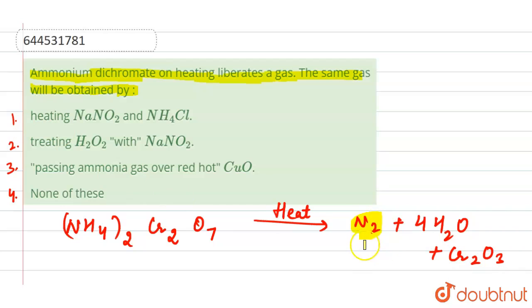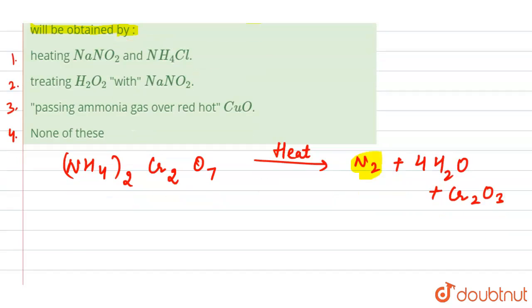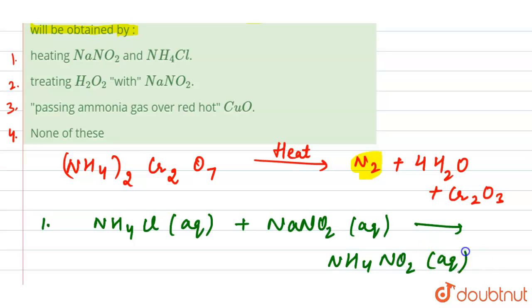So the first is NaNO2 plus NH4Cl. So when we have NH4Cl aqueous plus NaNO2 aqueous, then we have the formation of NH4NO2 aqueous plus NaCl. But this NH4NO2 is immediately decomposed and we have the formation of the N2 gas.